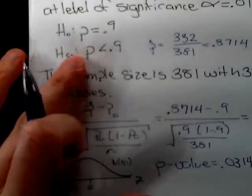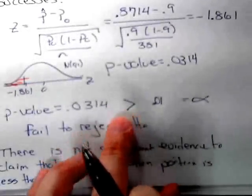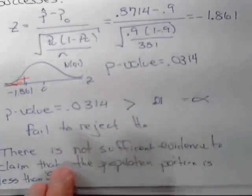So we first find the test statistic, which gives us a p-value, compare the p-value to the level of significance, fail to reject the null hypothesis, and write our conclusion.